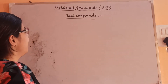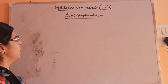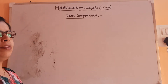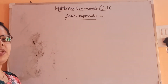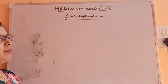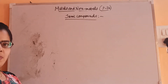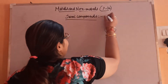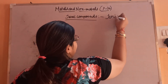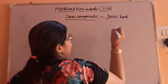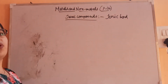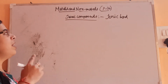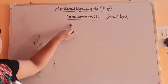Hello students, welcome back. So, we were discussing about the ionic bond — what kind of bond gets formed between the metal and the non-metal. We have seen that ionic bond is the bond which is formed by the transfer of electrons from metal to the non-metal. That is known as ionic bond, and the compounds in which the ionic bond is present, they are known as ionic compounds.